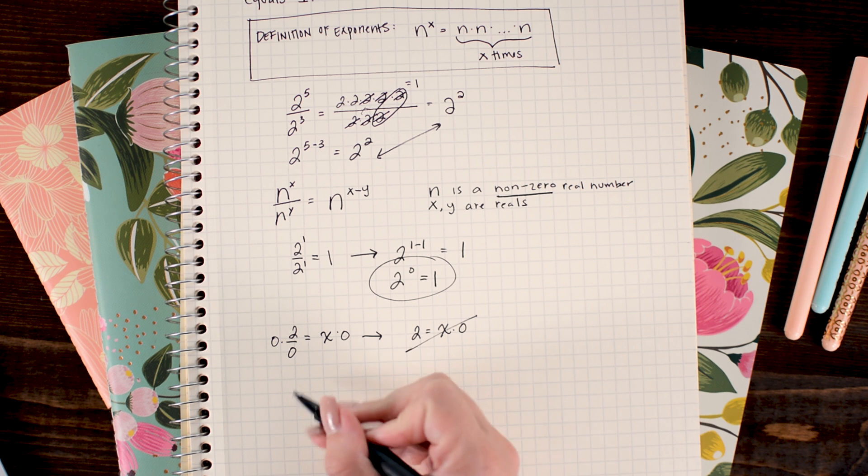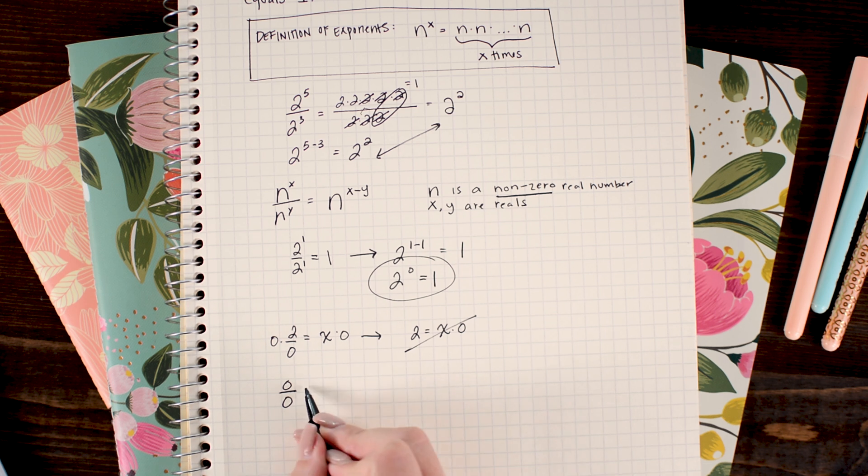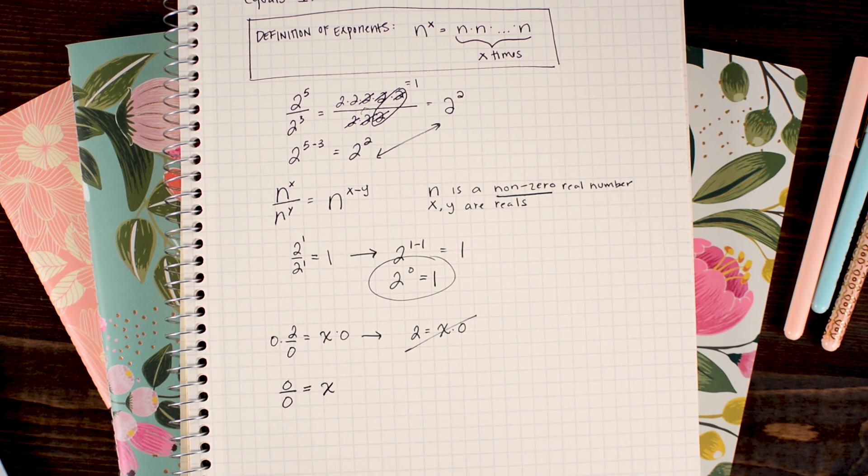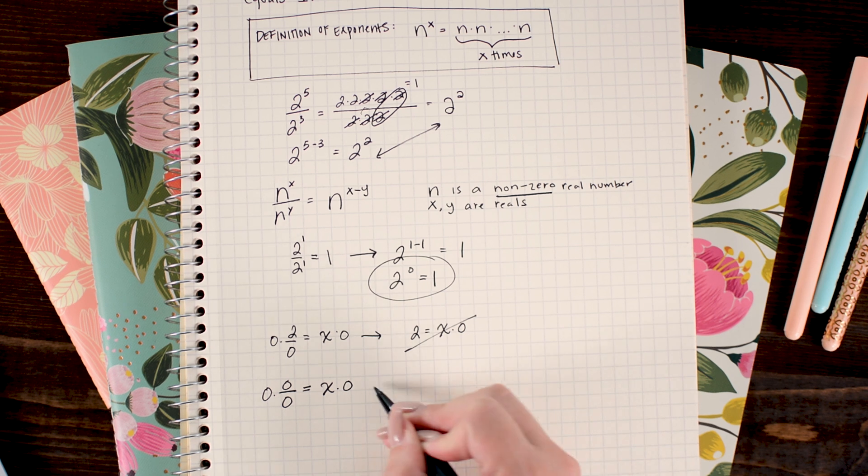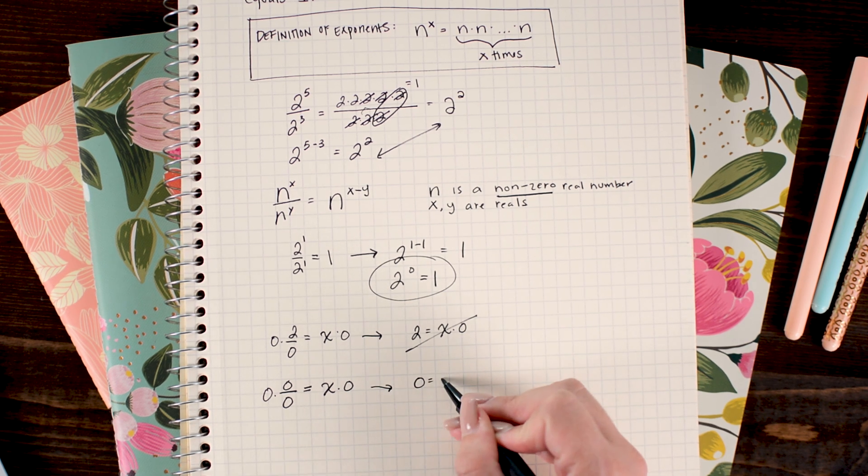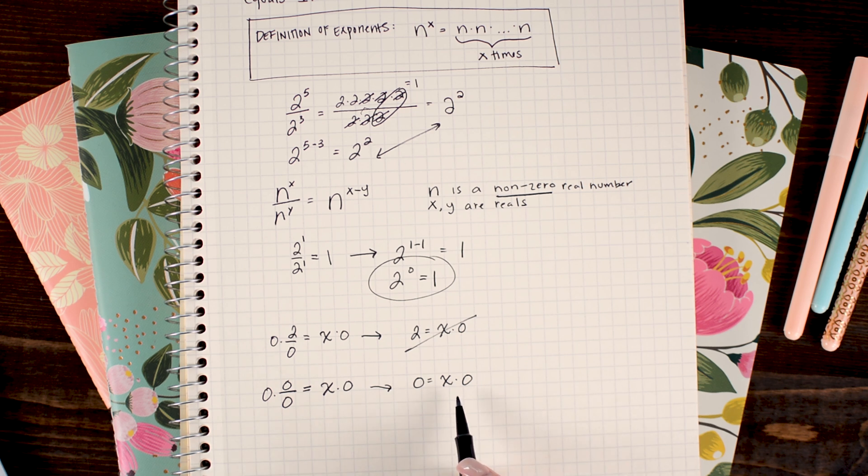But what about 0 divided by 0, Brett? That seems like maybe that would work. What does that equal? Okay, let's try to divide it. We'll set it equal to x. We'll multiply both sides by 0 and we will get 0 equals x times 0. Well, that seems a lot better, right off the bat. I know x could equal 1. 1 times 0 equals 0.